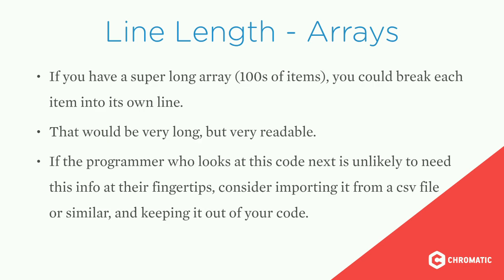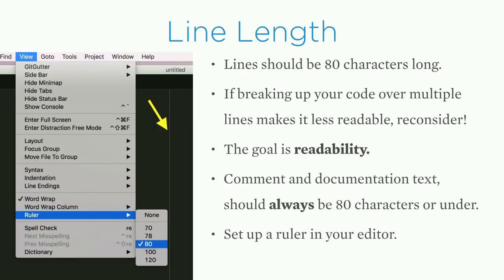If you have a super long array that's hundreds of items, you could break each item into its own line — it'll be very long but very readable. But if the programmer who looks at this code next is unlikely to need this info at their fingertips, like a list of zip codes or states, consider importing it from a CSV file and keeping it out of your code. Lines should generally be 80 characters long, though readability is the goal.